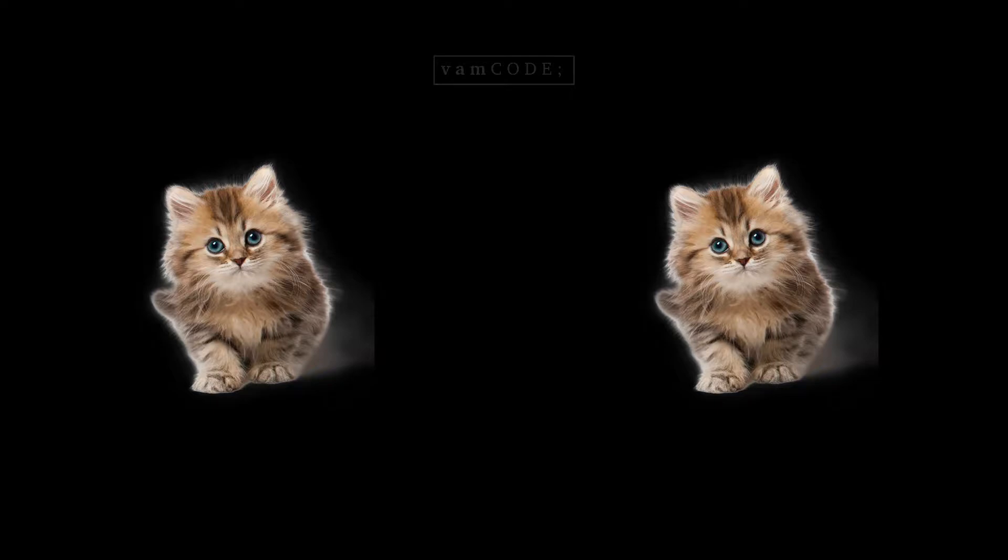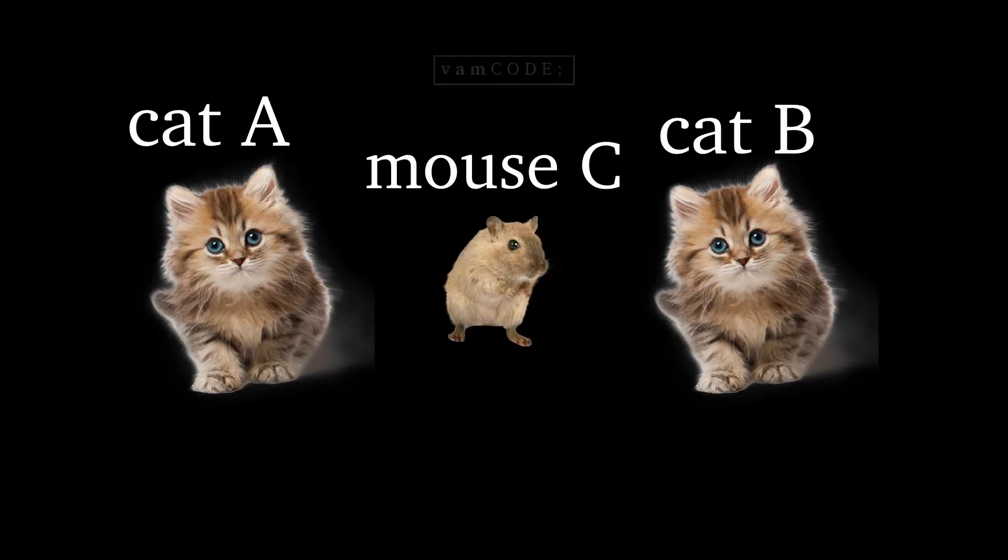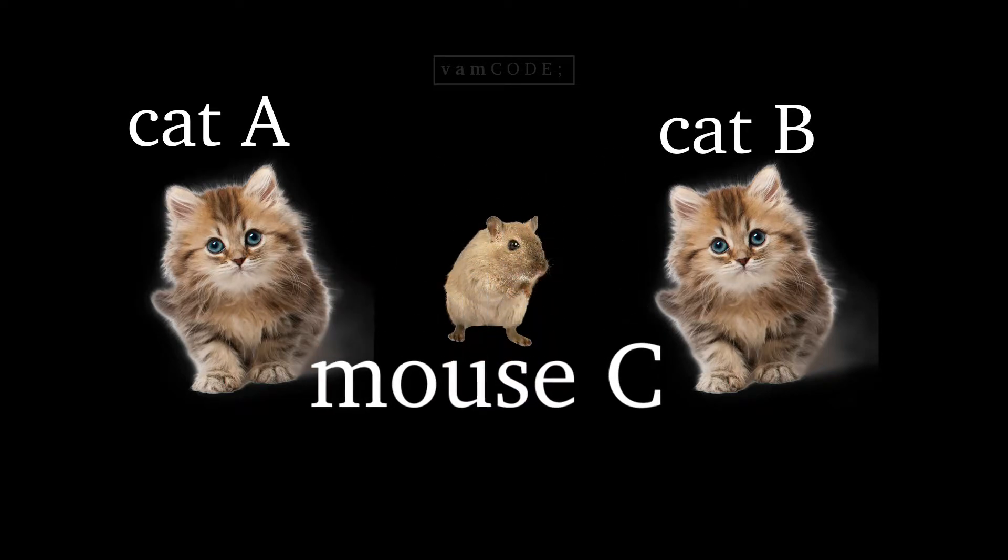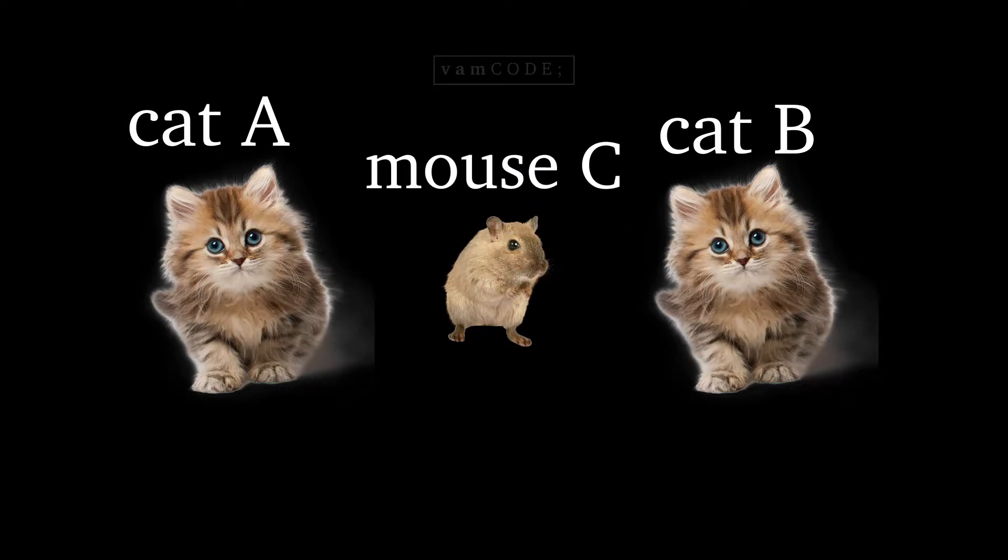So if you're given the positions of cat A, cat B, and mouse C, your job is to return cat A if cat A catches the mouse, return cat B if cat B catches the mouse, and return mouse C if both the cats are at an equal distance and the mouse survives.